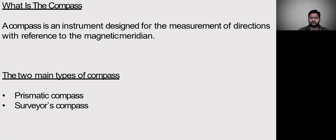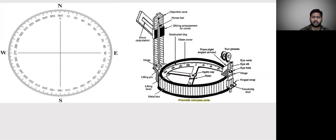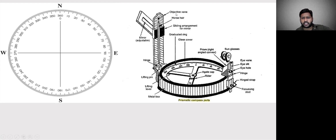There are two types of instruments in compass: one is prismatic compass and another is surveyor compass. Now we are going to see the diagram of the prismatic compass and its parts. If you observe this diagram, this is the prismatic compass. This part is called the object vane, from where you coincide the station.